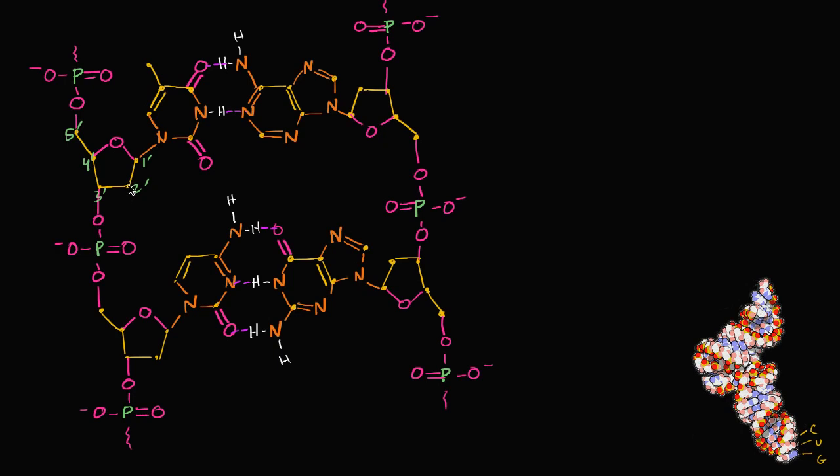We can see on the two prime carbon, we don't have an oxygen attachment. We don't have a hydroxyl group attached to it. Because of that, we know this is not ribose, this is deoxyribose. These two are also deoxyribose. So that tells us we have two strands of DNA, deoxyribonucleic acid. This part of the chain is derived from deoxyribose.